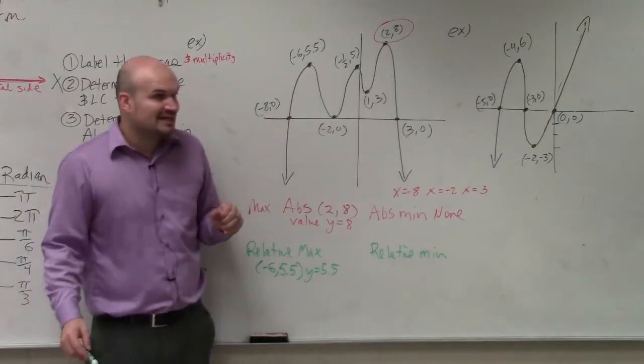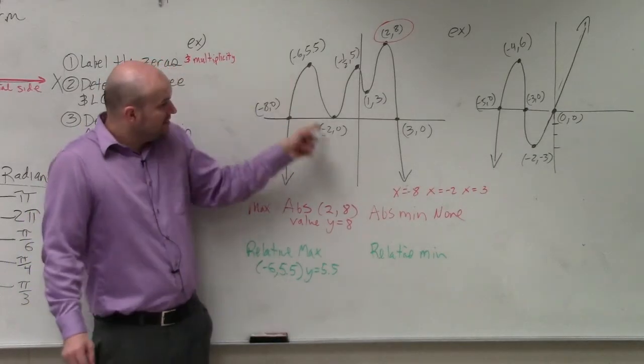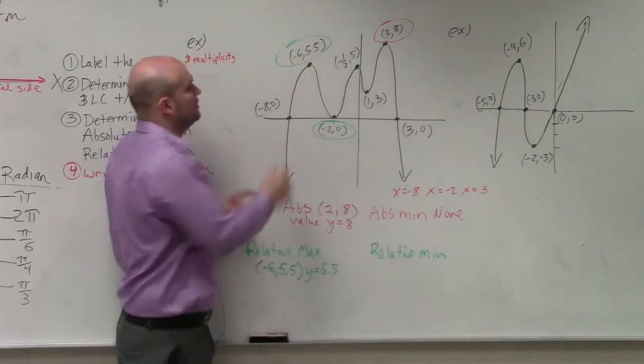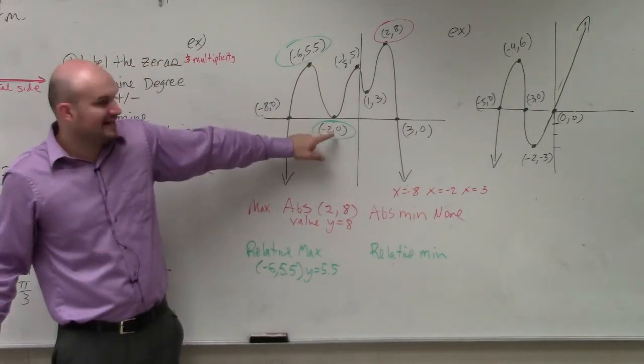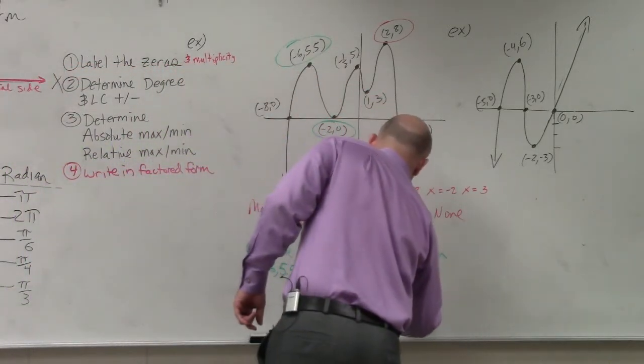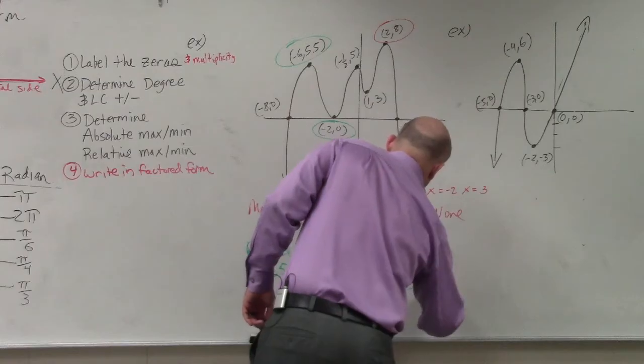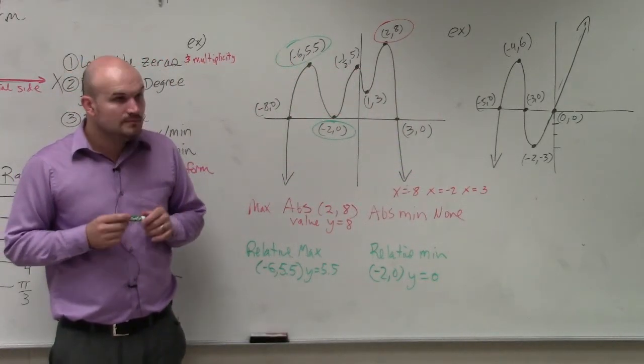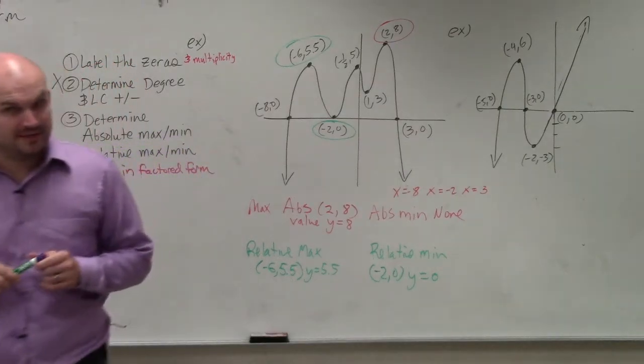And the relative min is going to be the lowest value. And the lowest y value is at negative 2, 0. Does everybody see that? Yes? No? Maybe?